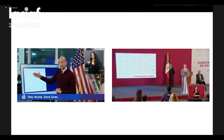This is very important for public policy. On the left you can see Governor Newsom and his team reporting on this information during a California press conference around lockdown orders. And on the right-hand side, you can see a conference with the President of Mexico.